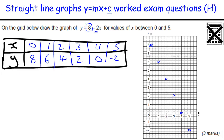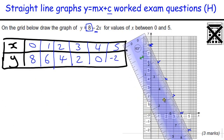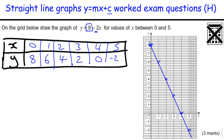Let me just get a ruler and join up the points. You must join the points up — that's one mark for drawing the points accurately, and the other will be for plotting the points accurately.